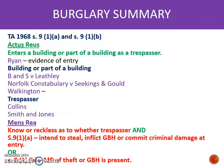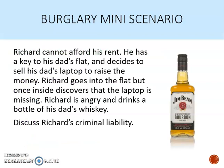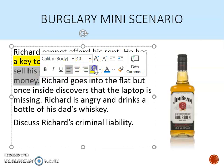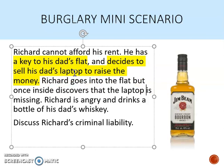Let's go back to the Richard scenario and identify the issues. Richard can't afford his rent. He has a key to his dad's flat — you might think he's not a trespasser, but remember Smith and Jones: he can become a trespasser if he goes beyond permission. He decides to sell his dad's laptop to raise the money. This is important because Richard is intending to steal the laptop before he actually goes in — he has intention before entry. So that is Section 9(1)(a) because he's got intention to steal at entry.